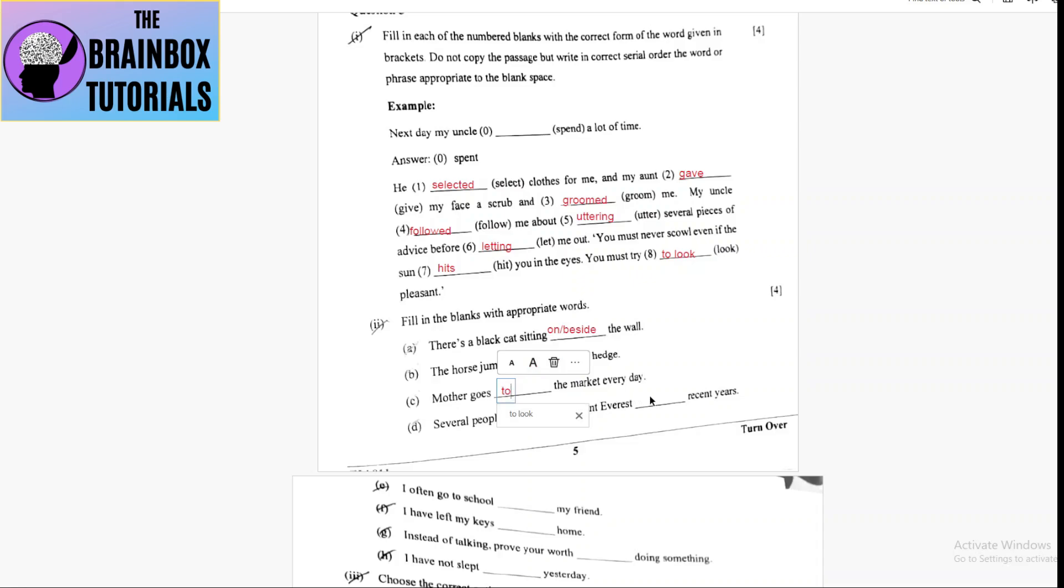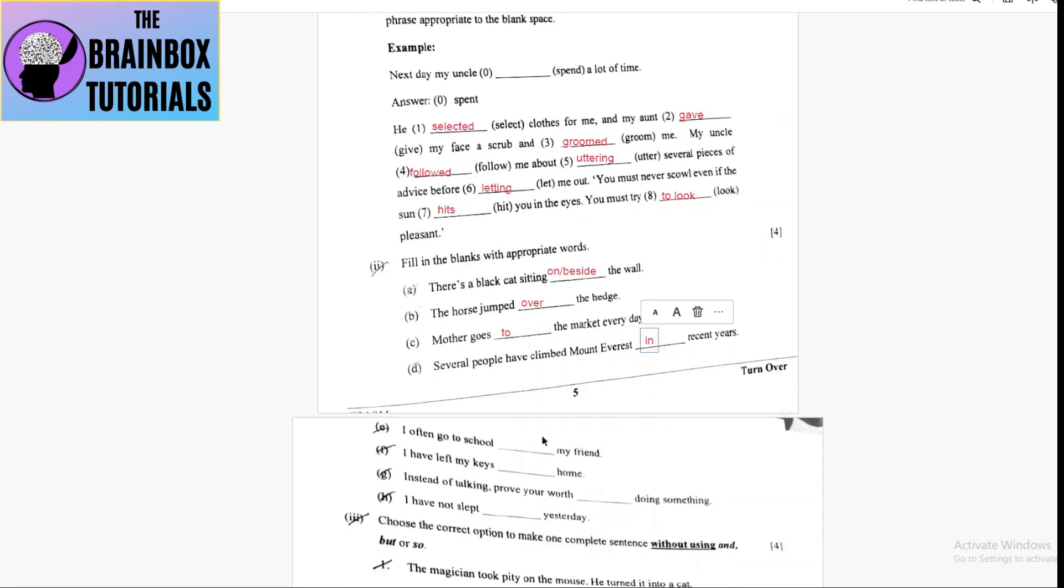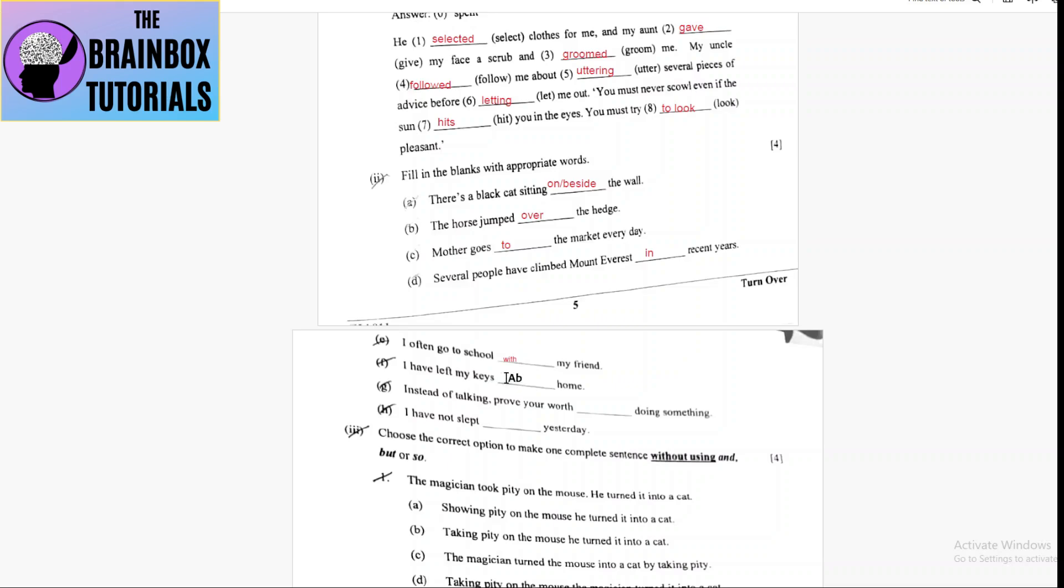First one: there is a black cat sitting on the wall. Next one: the horse jumped over the hedge. Mother goes to the market. Several people have climbed Mount Everest in recent years.